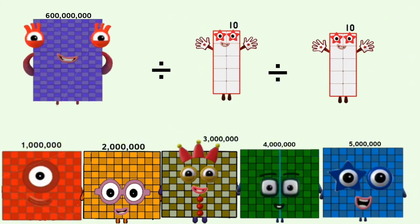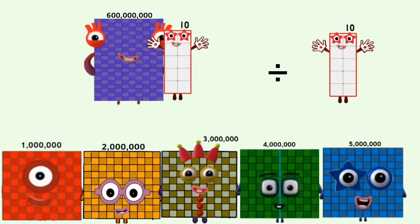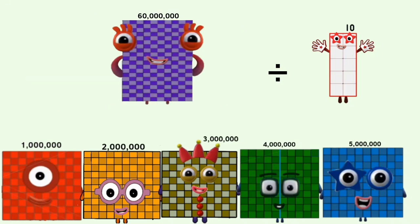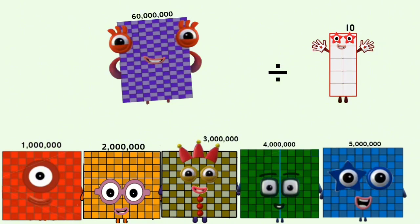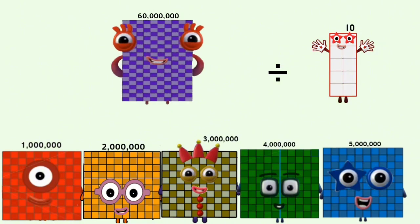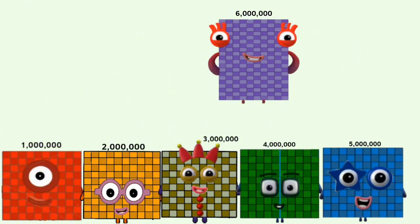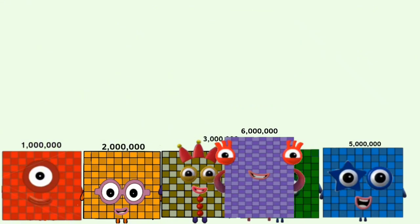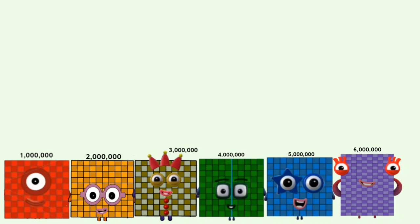600,000,000 divided by 10 equals 60,000,000. 60,000,000 divided by 10 equals 6,000,000.